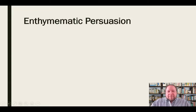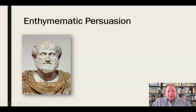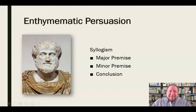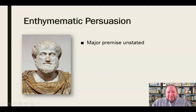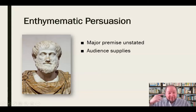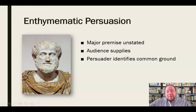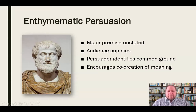They follow the enthymematic persuasion model set forth by Aristotle, who looked at syllogism and said that's maybe not the best way to persuade people. He said let's get rid of syllogisms and just assume that the major premise can go unstated — the major premise we'd normally have in a syllogism will be unstated, and the audience will supply that. We'll be on the same wavelength with them. As a persuader, we have to identify that common ground to make sure we're thinking the same thing the audience is. When we can make that connection, it encourages significant co-creation of meaning between the audience and the persuader.